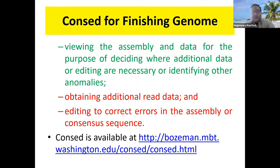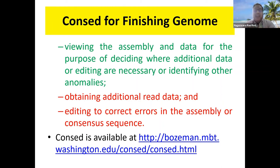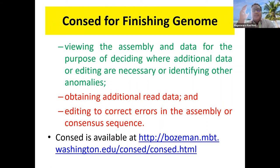The second step is obtaining additional data. Once we identify where data is required, we go back to the lab, look at the clone, resequence it, and get the data. The third step is editing to correct errors in assembly or consensus sequence — taking that resequenced data, inserting it where required, then reassembling using the same principles: finding overlapping regions, identifying consensus, and merging.